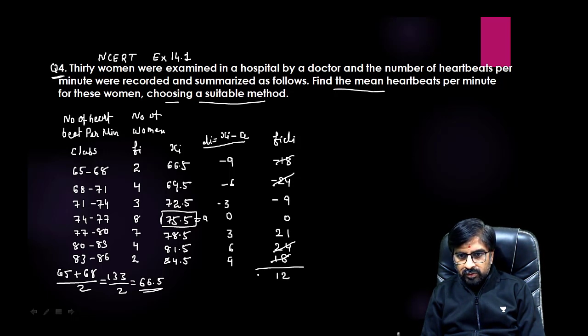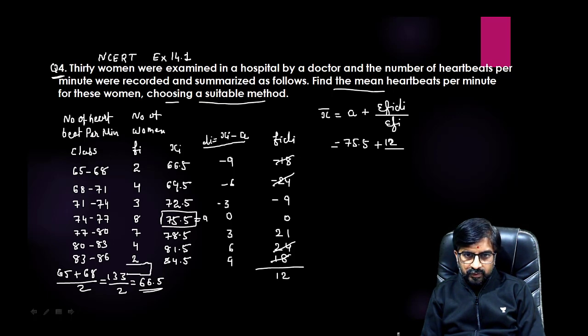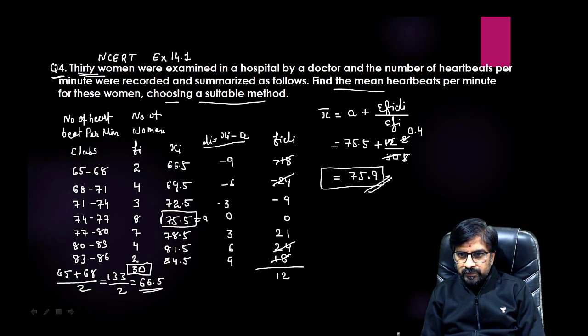After canceling, -24 and +24 cancel. Now 21 minus 9 gives 12, so your summation of fi di is 12. Our formula for finding mean by assumed mean is x̄ = a + Σ(fi di) / Σfi. a was 75.5 plus 12 upon 30. The 30 women were examined, so our frequency is 30. If you cancel, you get 0.4, so your sum will be 75.5 plus 0.4 gives you 75.9. This will be your mean.